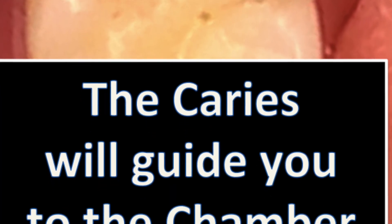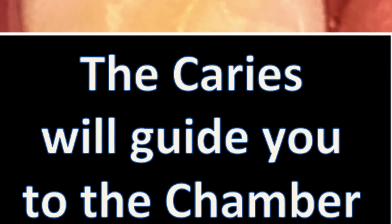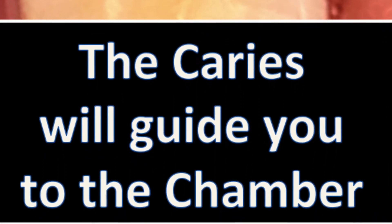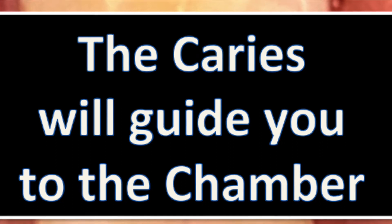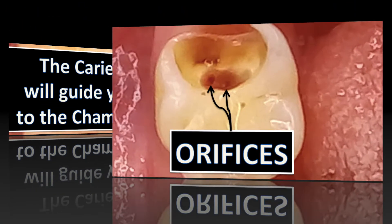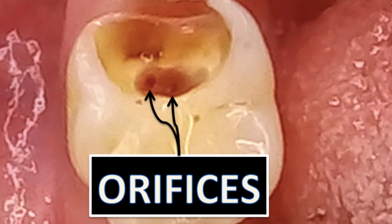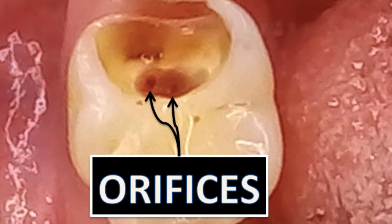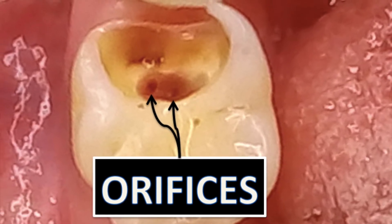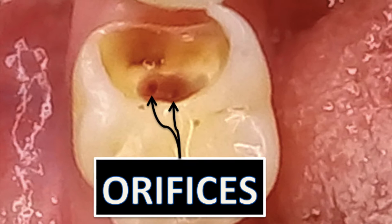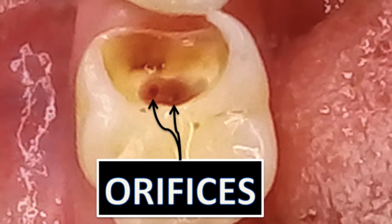Note that at this point your focus should be only on the pulp chamber and not on discovering the root canal orifices. Once debrided, the pulp chamber will automatically reveal its hidden secrets, and you will be surprised how easy it is to locate canals once the pulp chamber has been properly cleaned.